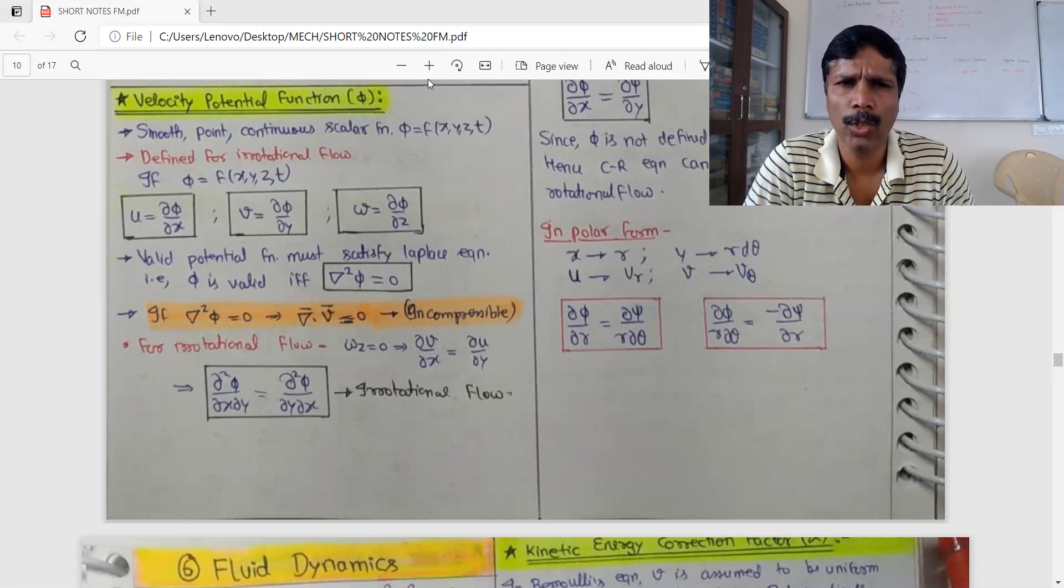d phi by dx equal to u, d phi by dy equal to v, d phi by dz equal to w.